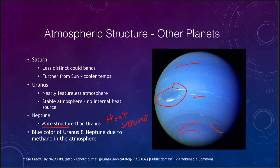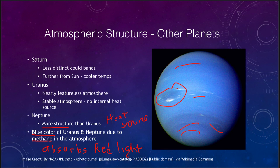The other thing we note about Uranus and Neptune is their distinct blue color, and that is due to methane in the atmosphere. Methane absorbs red light. The light from the sun that contains all the colors of the rainbow strikes Uranus and Neptune, and the reds and oranges are absorbed, leaving only the blues and greens to be reflected back to us — and that is what we are able to see.